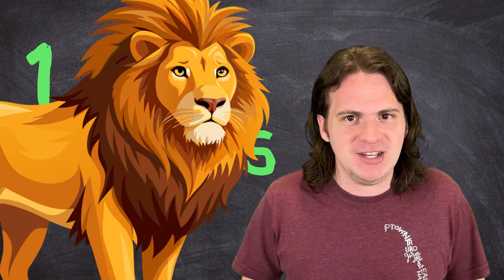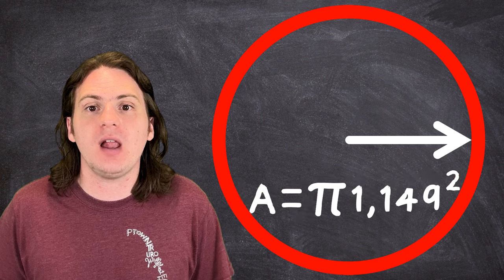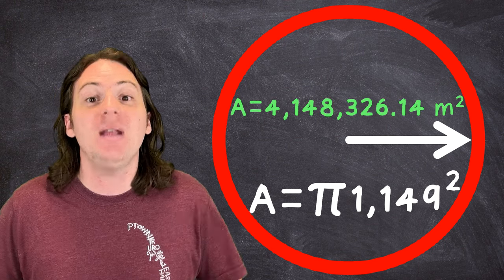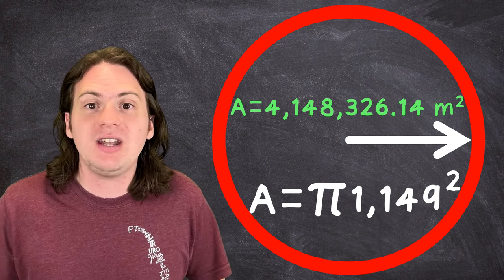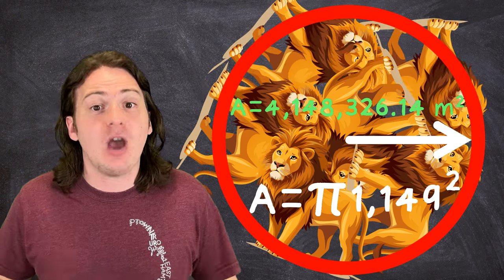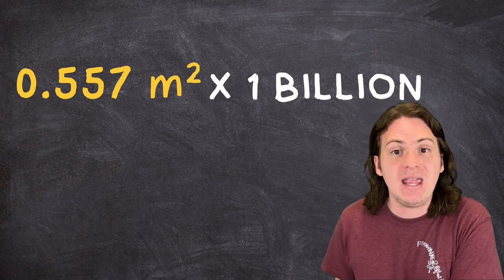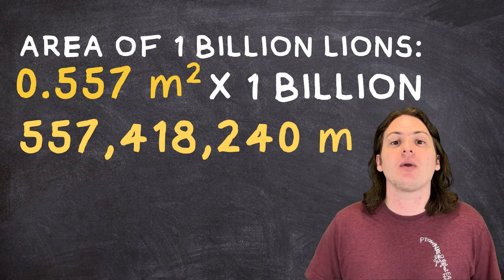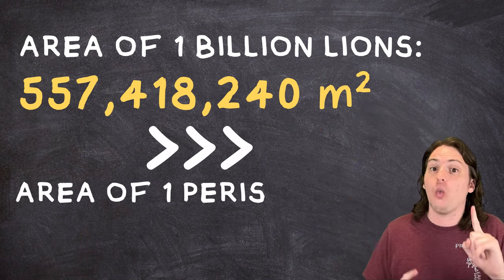So how many lions is that? First, we can find the total area that a Perish Song can cover by plugging our range into the formula for the area of a circle, pi r squared, to find that Perish Song can cover an area of 4,148,326.14 meters squared. Now we just need to find out how many lions that could conceivably cover. In my last video, I determined that the average area for a lion was around 0.557 meters squared. Multiply that by 1 billion, and you find that 1 billion lions covers an area of 557,418,240 meters squared, which is a lot, lot more than the area for one Perish Song.